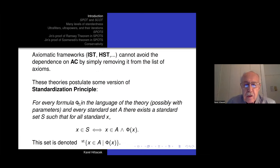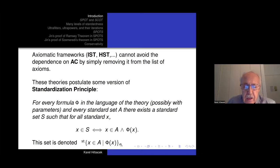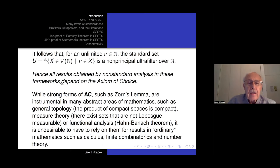What standardization says is: if φ is any such formula with arbitrary parameters and A is a standard set, then there is a standard set S whose standard elements are exactly the standard elements of A satisfying φ. Now it turns out that from this standardization principle one gets ultrafilters by the same argument. Take an unlimited natural number N, and let U be the standard set whose standard elements are those subsets of N that contain N — and that's a non-principal ultrafilter over N.